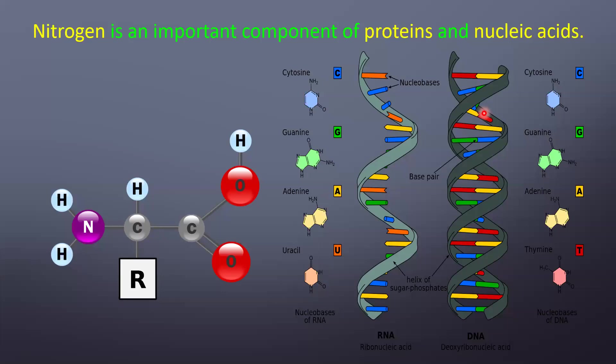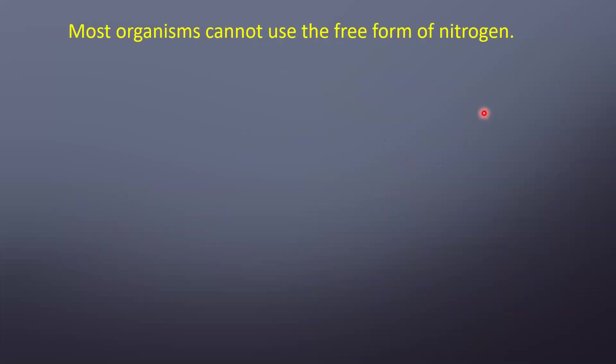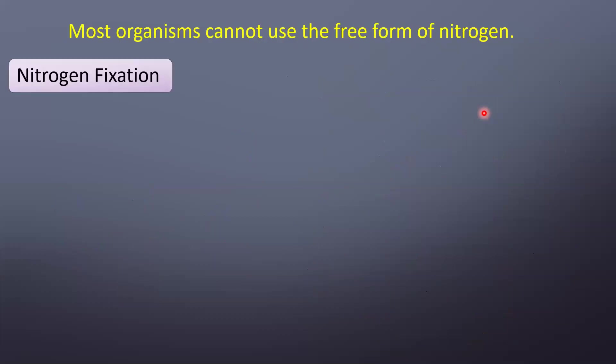Since you cannot use the atmospheric nitrogen, you need to find another solution — and we have that solution. Most organisms cannot use the atmospheric free nitrogen. So what we do is nitrogen fixation. Nitrogen fixation is nothing but trapping the atmospheric nitrogen and putting it into the soil. You have fixed the nitrogen in one place — that is nitrogen fixation.